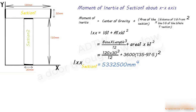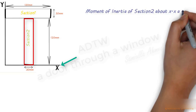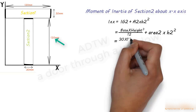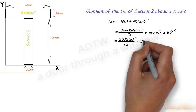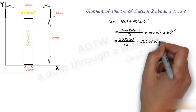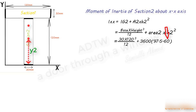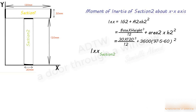Similarly, we find the moment of inertia of Section 2 about the X-axis. The formula gives: (30 × 120³) / 12 + 3600 × (97.5 − 60)². Here 97.5 mm is the CG distance of the T-section from the X-axis and 60 mm is the CG distance of Section 2, so their difference gives h2. After computing, the moment of inertia of Section 2 about the X-axis equals 9,382,500 mm⁴.